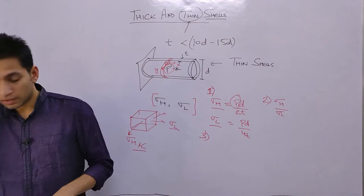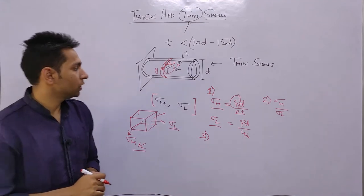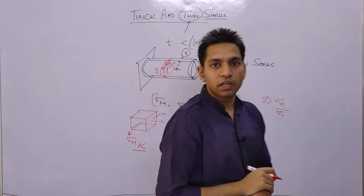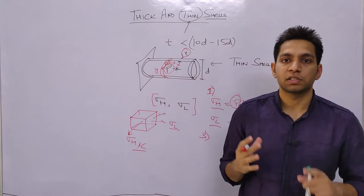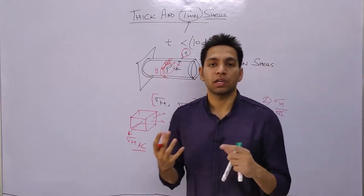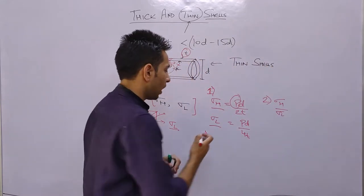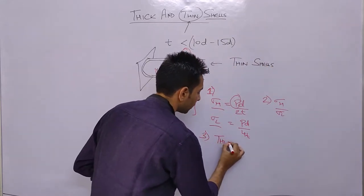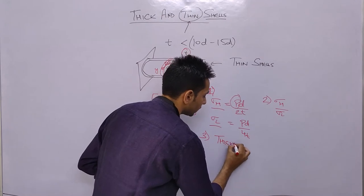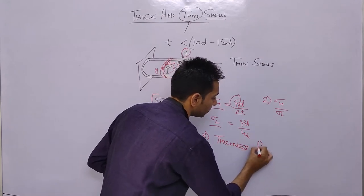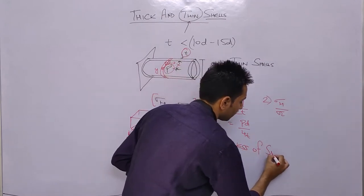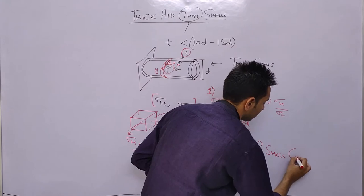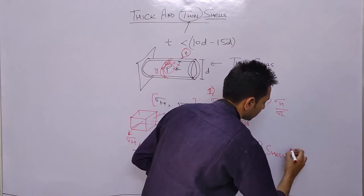The third kind of question asks you to find the thickness of the cylindrical shell or thin shell member — how to calculate the thickness of this shell member.